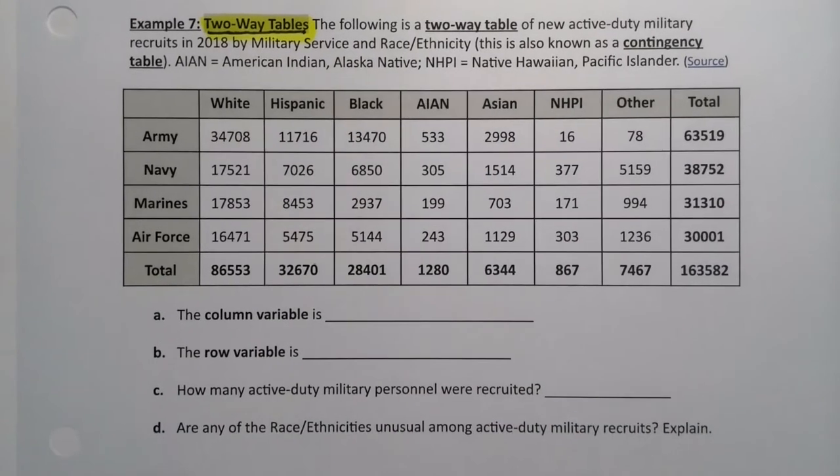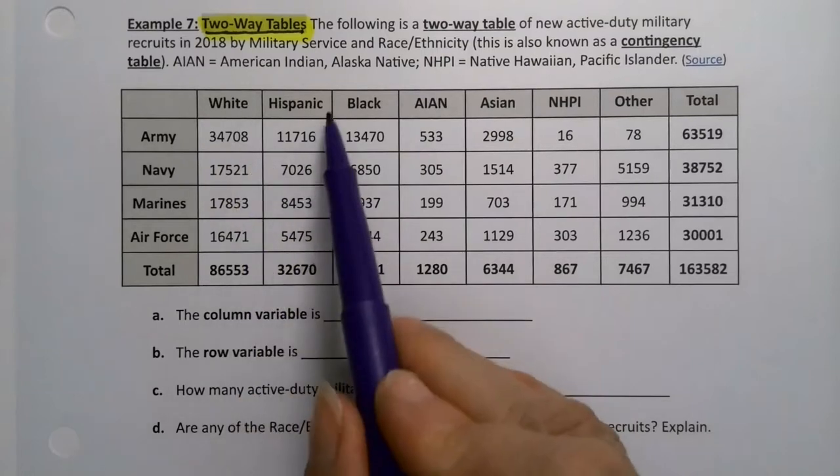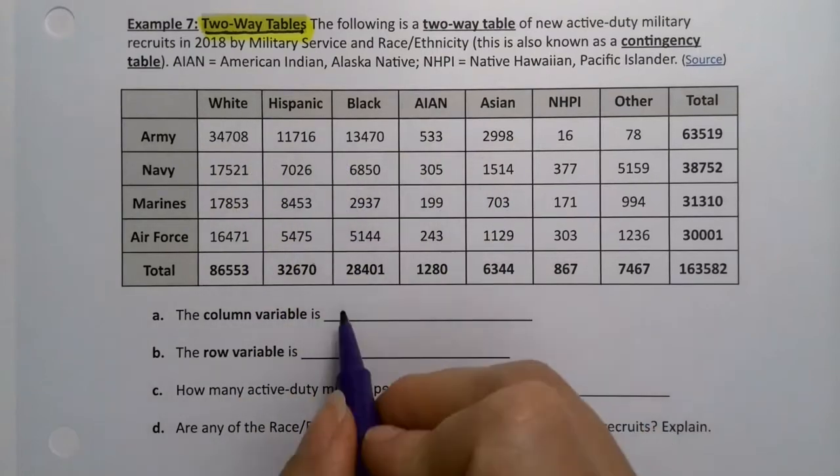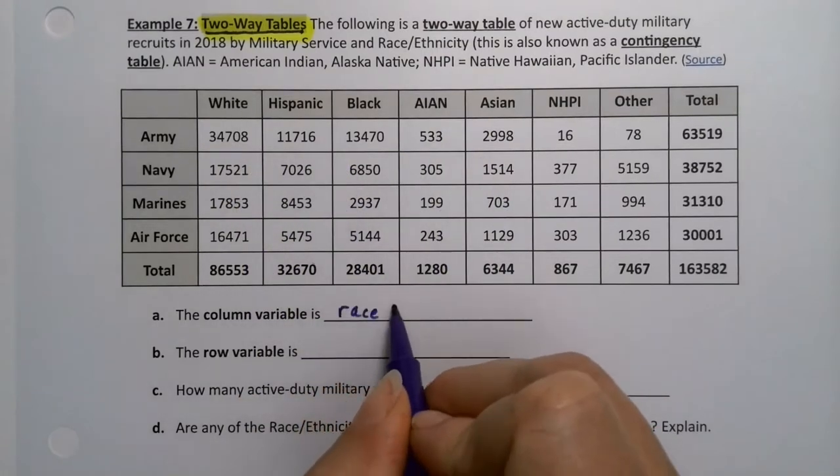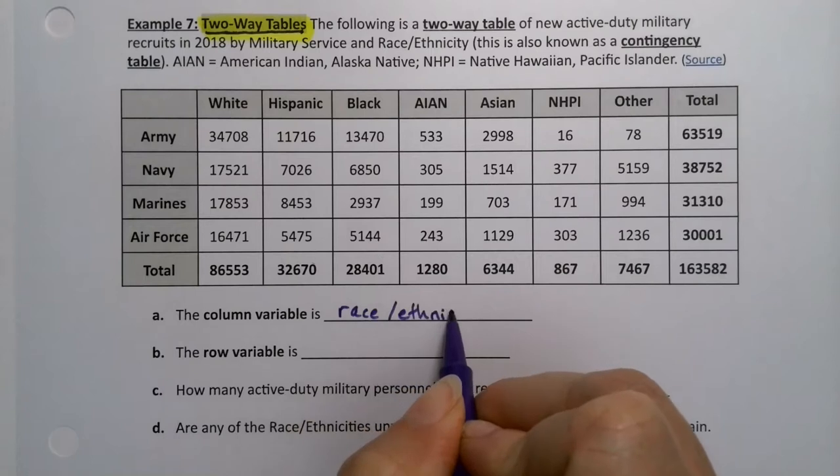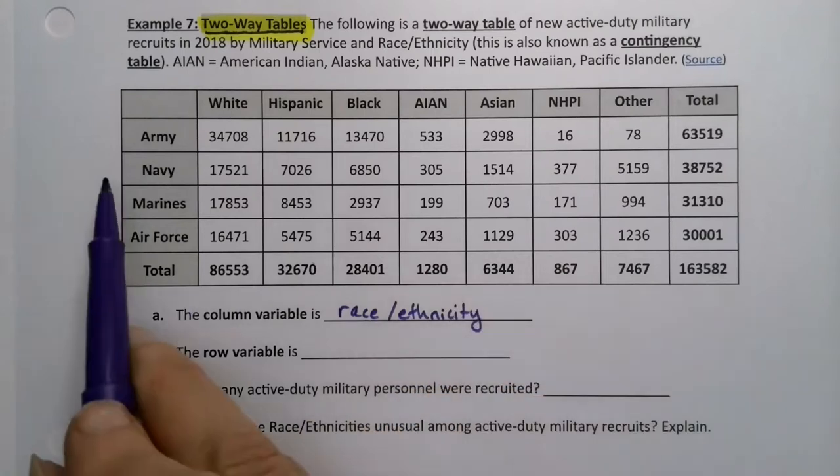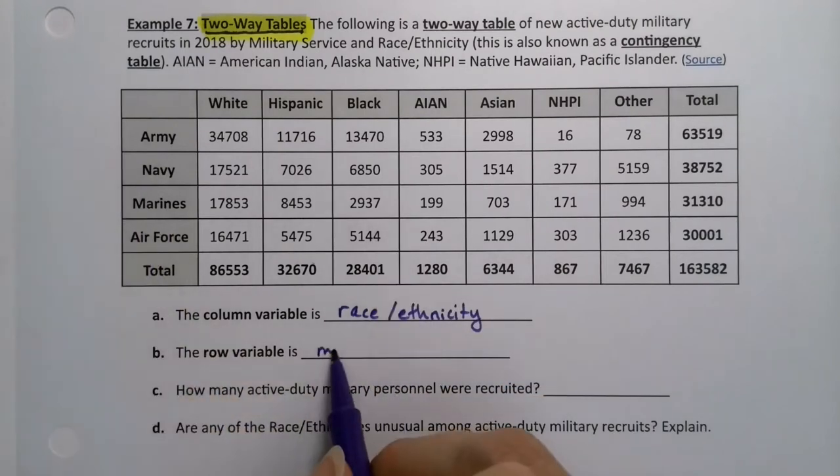All right, so the column variable is the columns, which in this case is race, ethnicity.